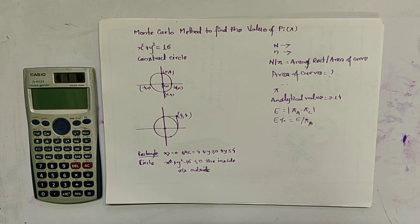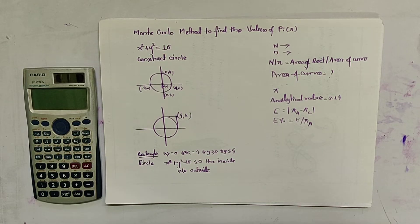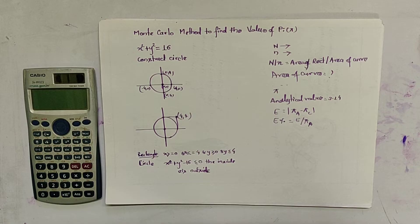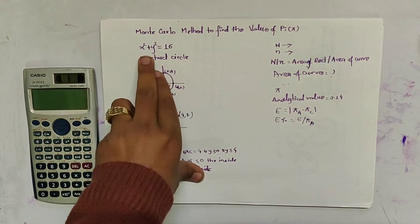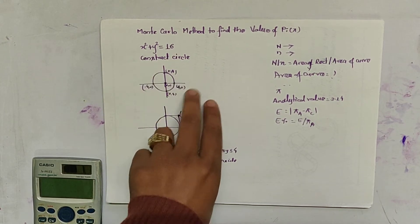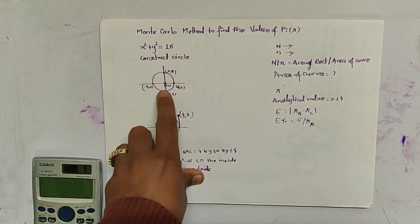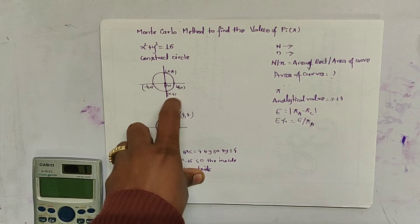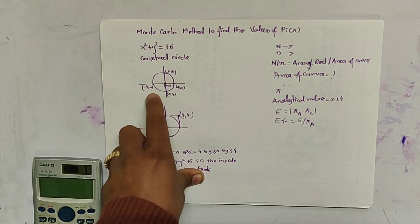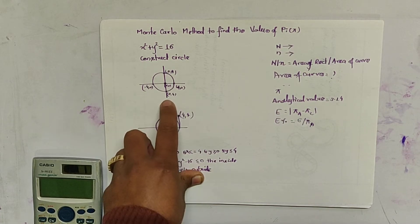The Monte Carlo method is used to find the area under the curve. Let us consider a curve that consists of pi while calculating the area. We consider a circle with equation x² + y² = 16. When you construct this circle, it is centered at (0, 0) and intersects the x-axis and y-axis at (4, 0), (−4, 0), (0, 4), and (0, −4).